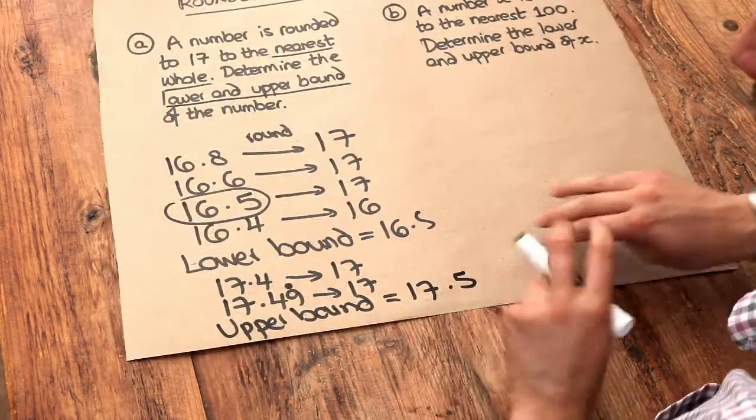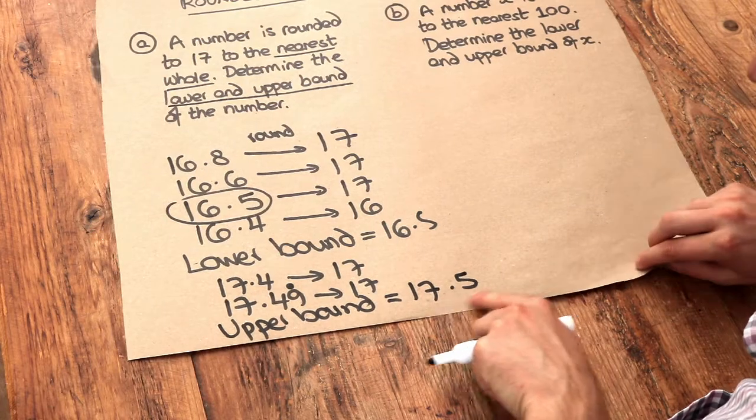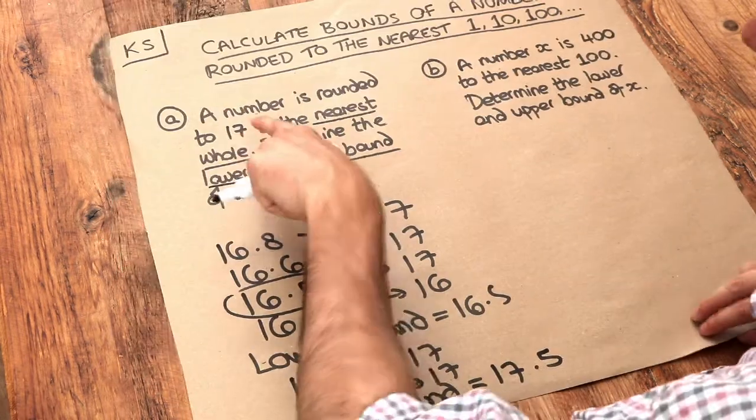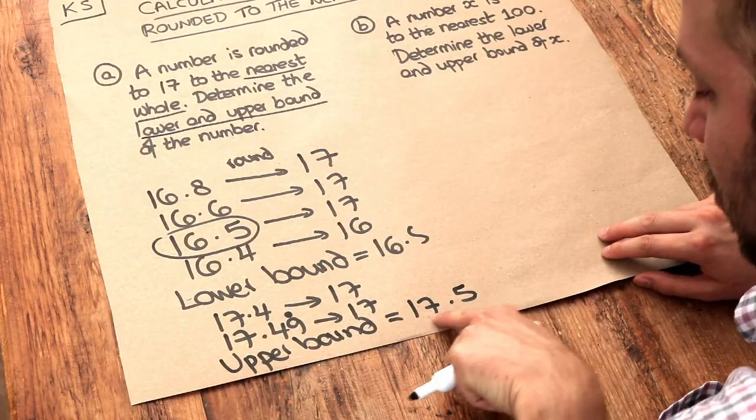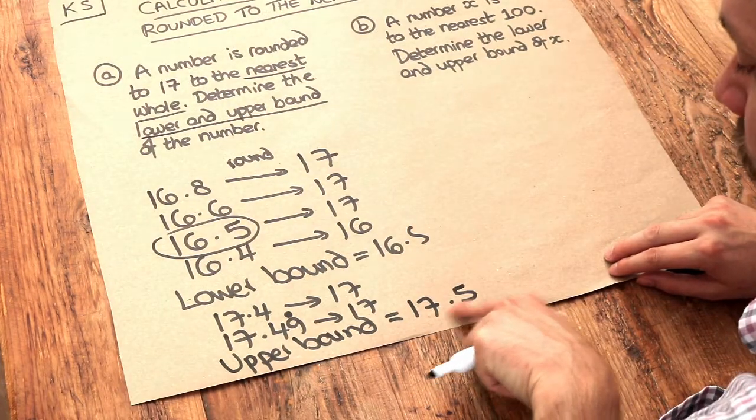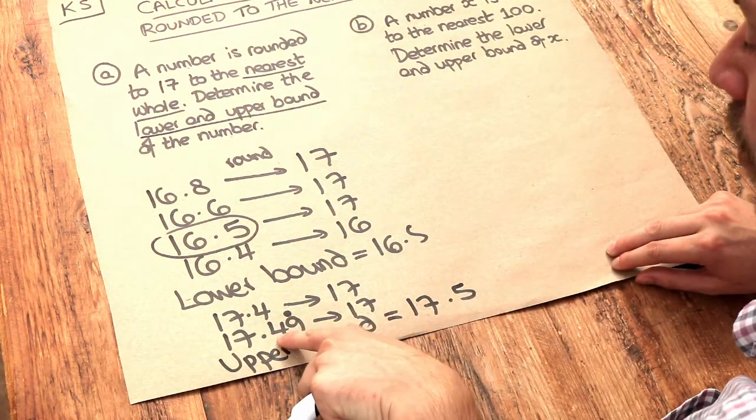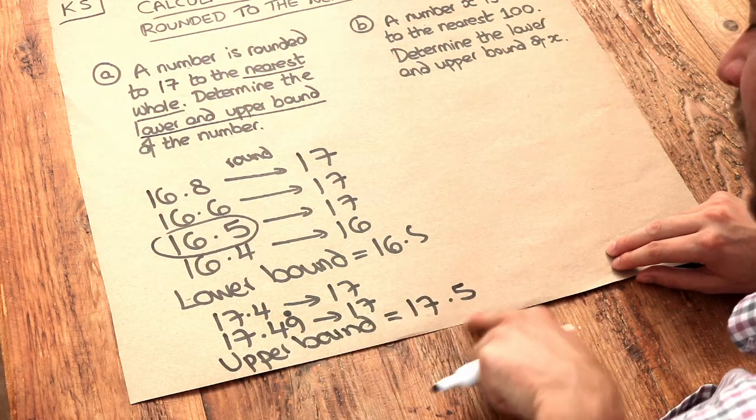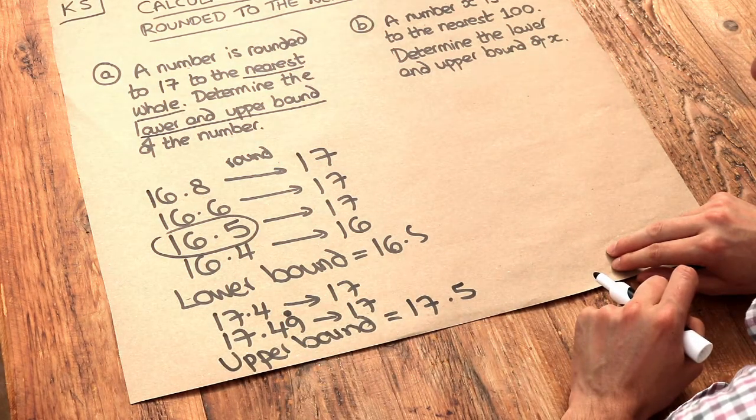And you might think that's a bit weird, because 17.5, when you round it to the nearest whole, is actually 18, not 17. But the thing is, it's just a smidge below 17.5. It's 17.49 recurring. But we actually write the upper bound as 17.5.